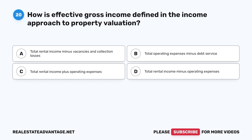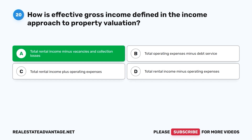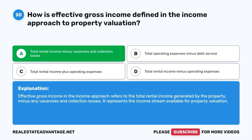Question 20. How is effective gross income defined in the income approach to property valuation? A. Total rental income minus vacancies and collection losses. B. Total operating expenses minus debt service. C. Total rental income plus operating expenses. D. Total rental income minus operating expenses. The correct answer is A. Effective gross income in the income approach refers to the total rental income generated by the property minus any vacancies and collection losses. It represents the income stream available for property valuation.